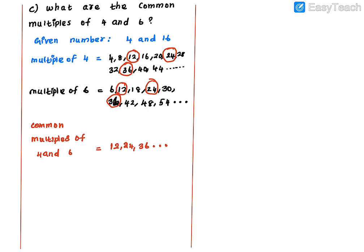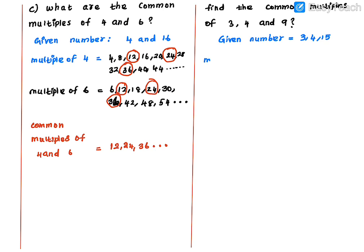Now one more example: find the common multiples of 3, 4, and 9. Write the given numbers: 3, 4, and 9. Multiples of 3: 3, 6, 9, 12, 15, 18, 21, 24, 27, 30 — and it goes on continuously. Multiples of 4: 4, 8, 12, 16, 20, 24, 28, 32, 36, 40 — going on.